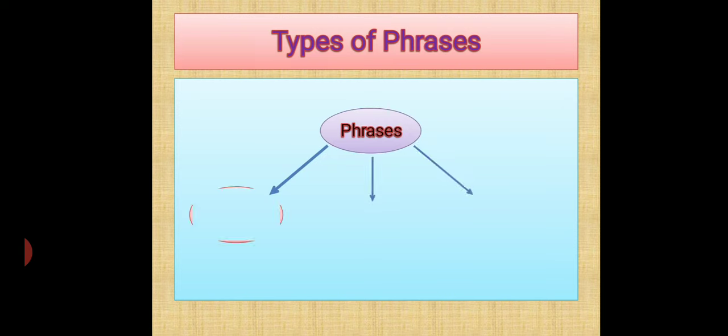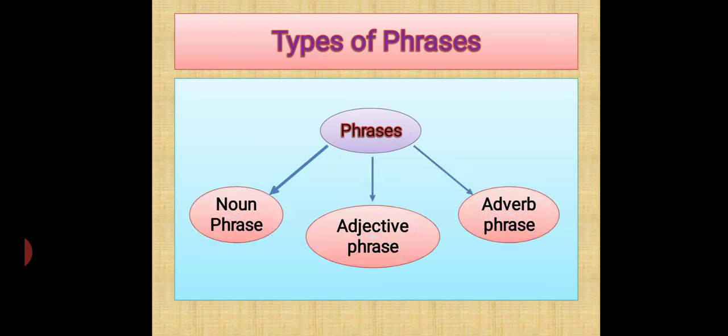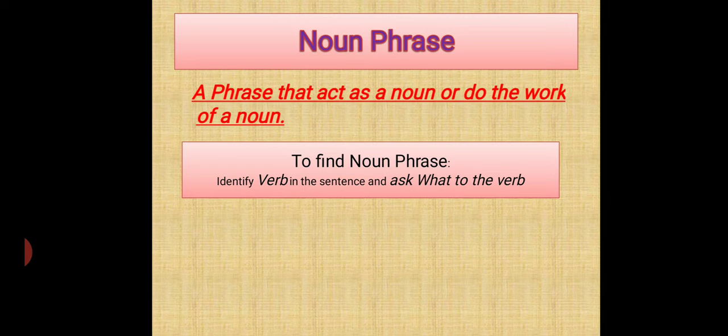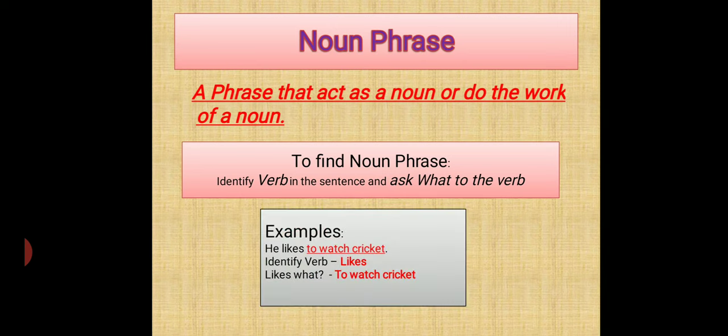Next, types of phrases. We have three types of phrases: noun phrase, adjective phrase, and adverb phrase. A noun phrase is a phrase that acts as a noun or does the work of a noun. To find a noun phrase, identify the verb in the sentence and then put the question 'what' to the verb, and whatever answer you get becomes your noun phrase. For example: 'He likes to watch cricket.' What is your verb? Likes. Now what does he like? To watch cricket. So 'to watch cricket' becomes your noun phrase.